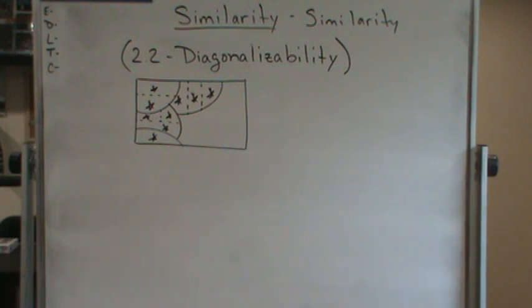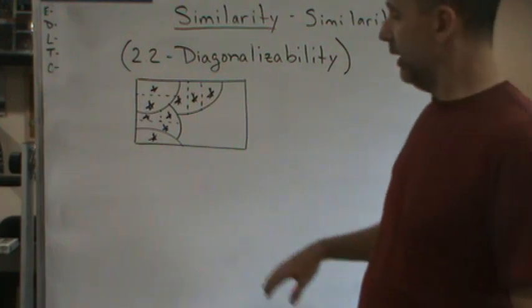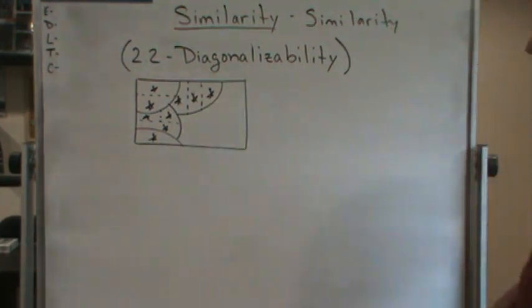Okay, this diagram on the board, the solid curves show the matrix equivalent classes, but then the dashed lines show the similarity classes. Just as an idea, something visual.